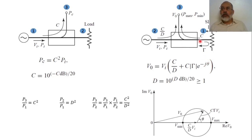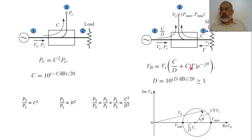The total signal at port three is a complex summation of two components: C/D and C·|Γ|·e^(−jθ). By changing the position of the sliding load along the transmission line, we change the value of θ. The maximum occurs when these two components are in phase, giving V_max = C/D + C·|Γ|. The minimum occurs when they are out of phase, giving V_min = C/D − C·|Γ|.